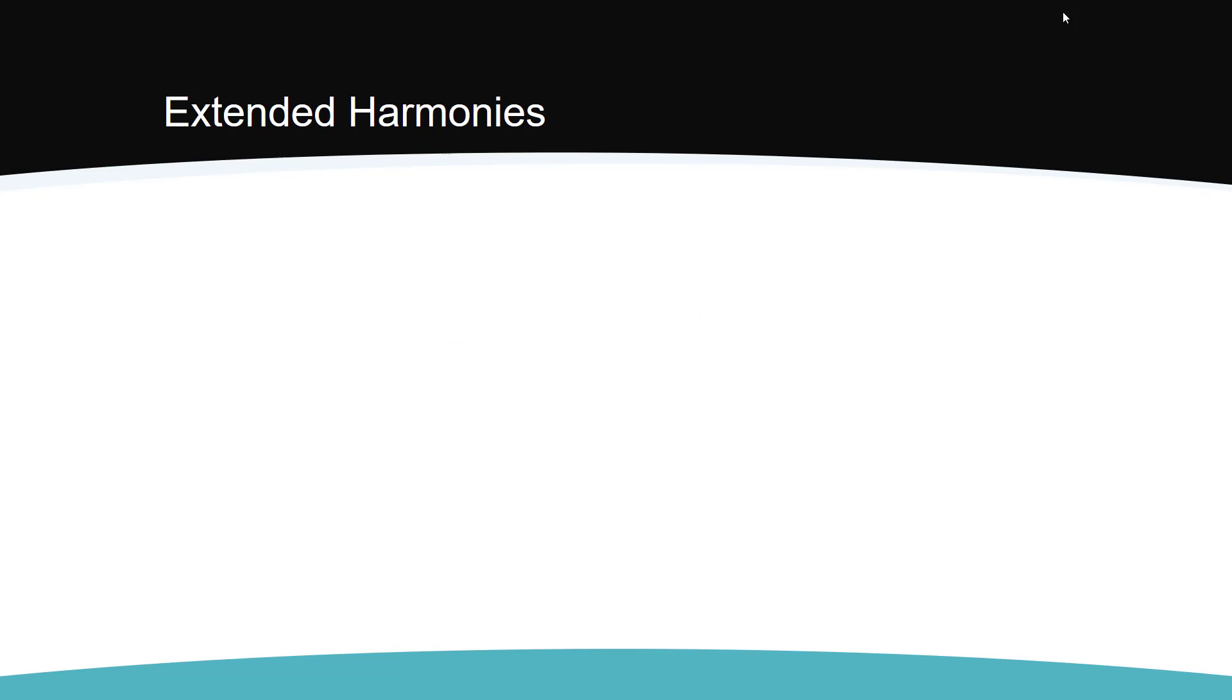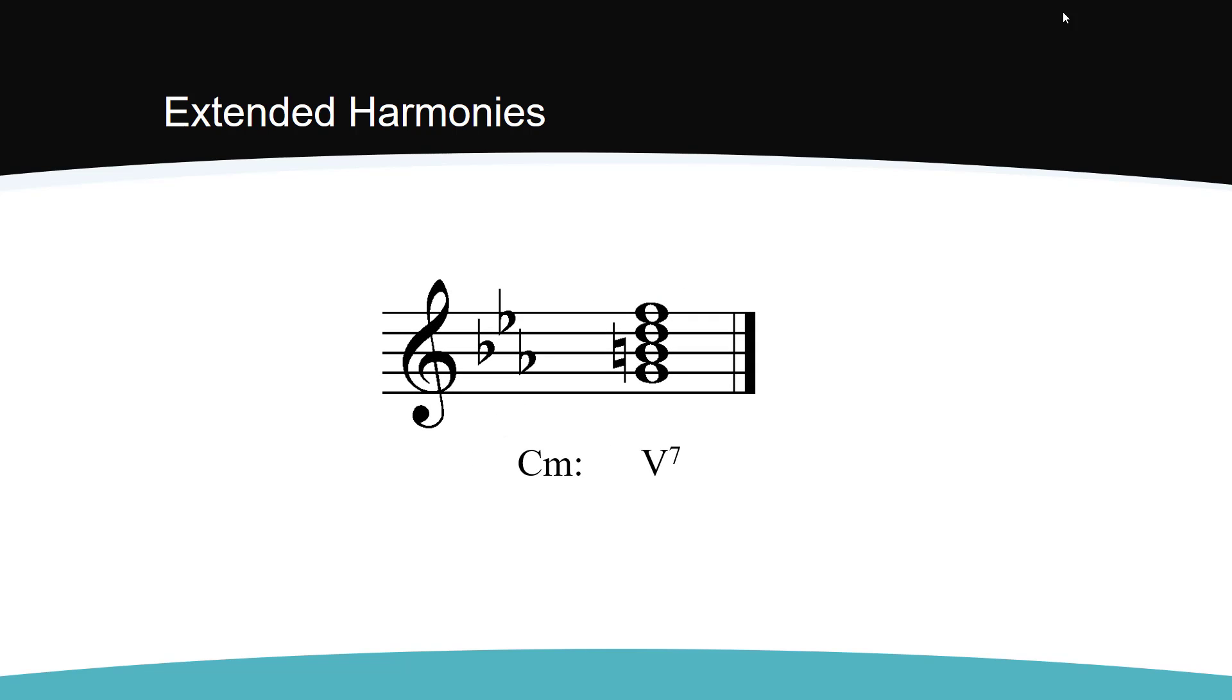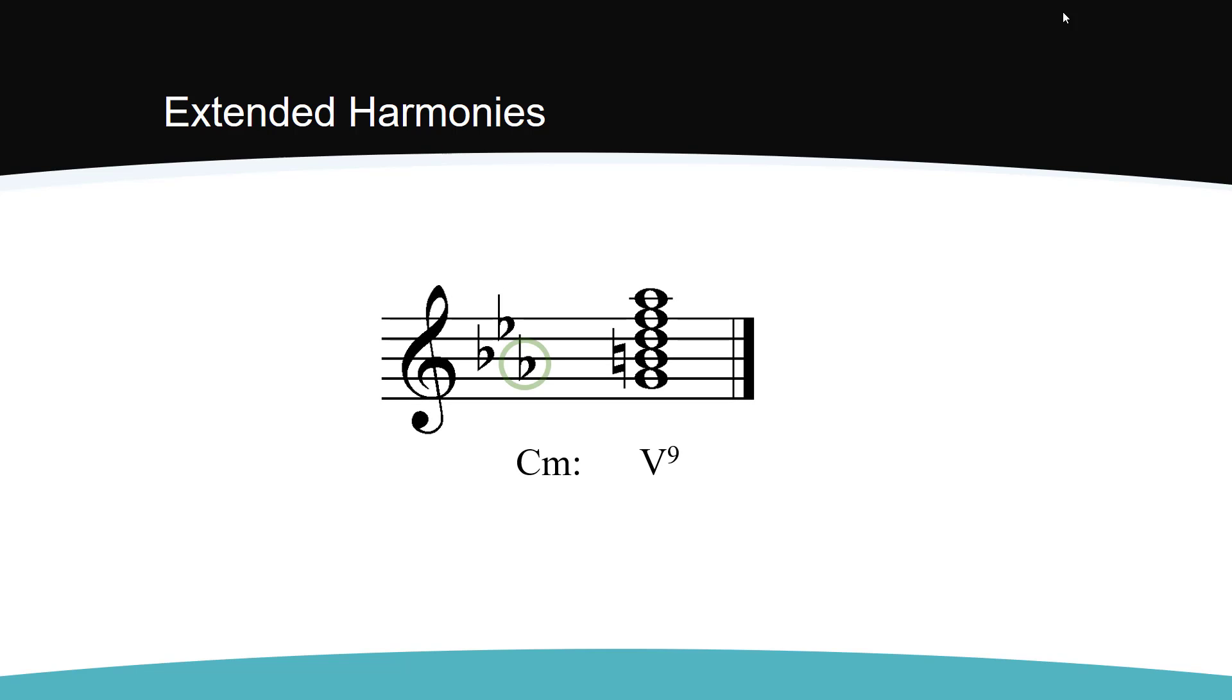In minor, we start the same way. The dominant 7th is still major-minor because we raise the leading tone. When we add the 9th, though, we have to take the key signature into account. In minor, we see that the 9th is now a minor 9th above the root. Oddly, there is no distinction between the Roman numeral of the V9 chord in major or in minor. It is still written as an uppercase 5 with a superscript 9.